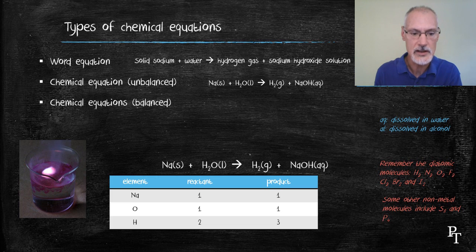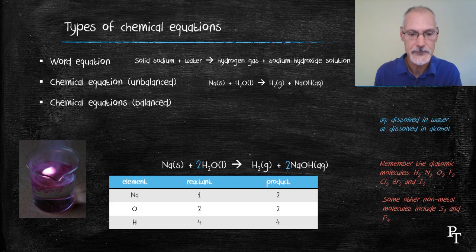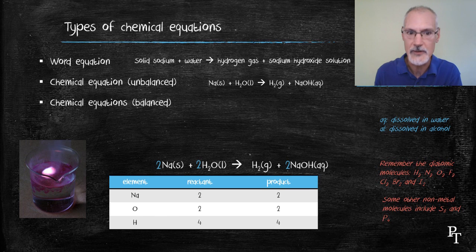To solve this situation I introduce two coefficients of 2 in front of those substances water and sodium hydroxide. This brings all of our elements into balance, with the exception of the sodium, and I need a further 2 to do that. Now my numbers and types of atoms are the same on both sides of the equation.